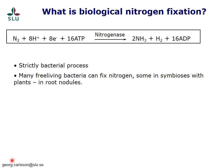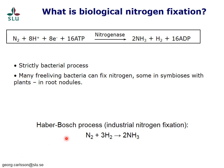Biological nitrogen fixation is in certain ways the same process as industrial nitrogen fixation called the Haber-Bosch process, where nitrogen gas from the atmosphere also reacts with hydrogen to form ammonia. The difference is that these two gases need to be mixed under high temperature and pressure to make the reaction happen, and the ammonia afterwards needs to be converted to ammonium-based or nitrate-based fertilizers distributed to crops. In biological nitrogen fixation, the end product is directly taken up by the organism that performs the nitrogen fixation.